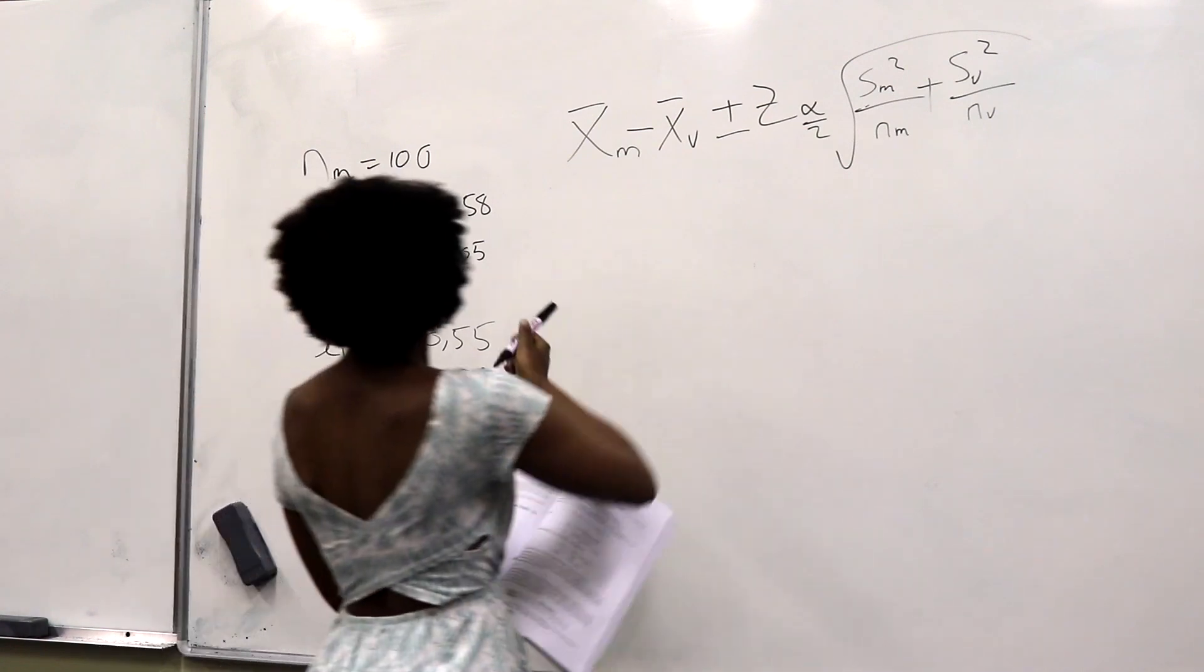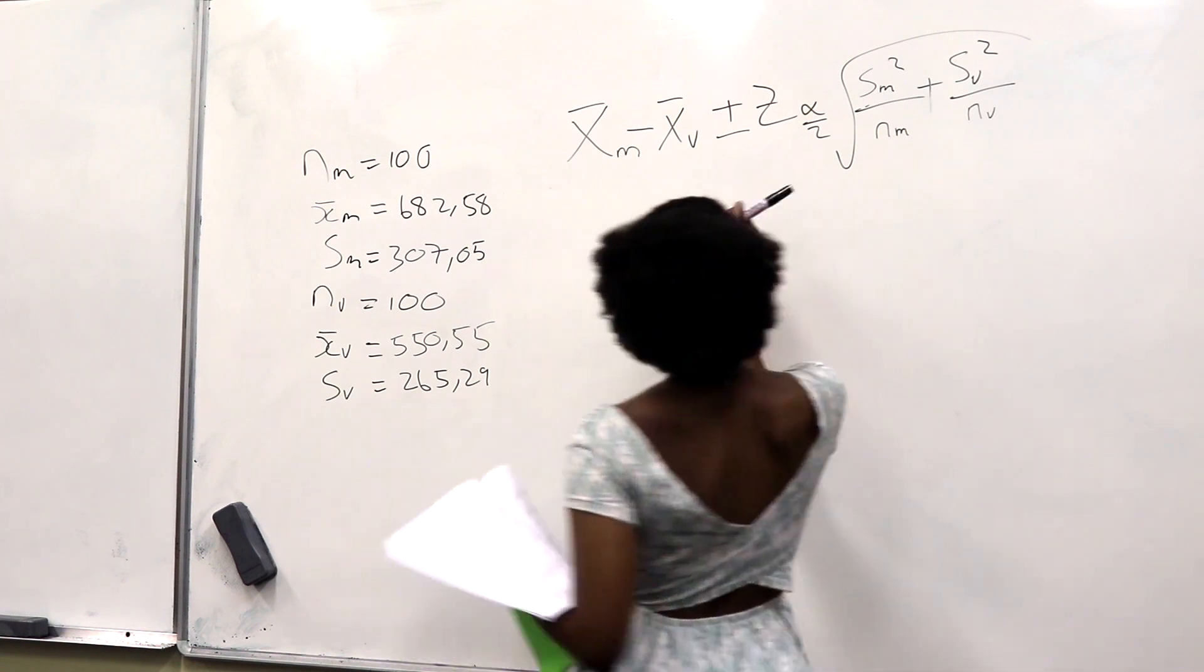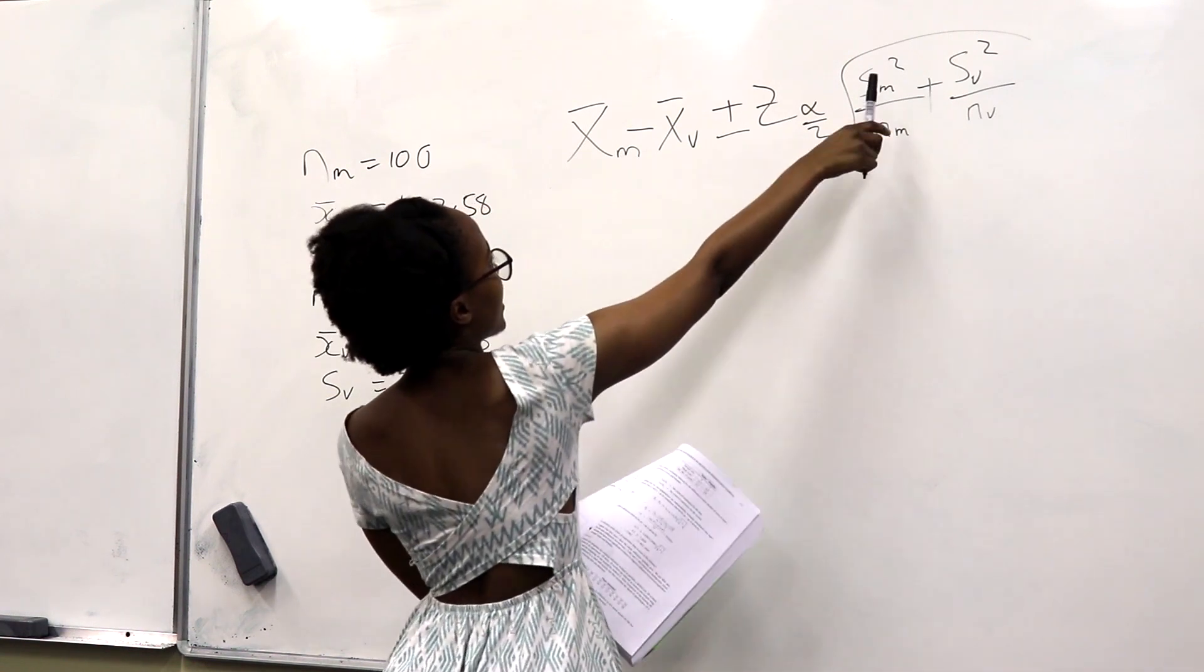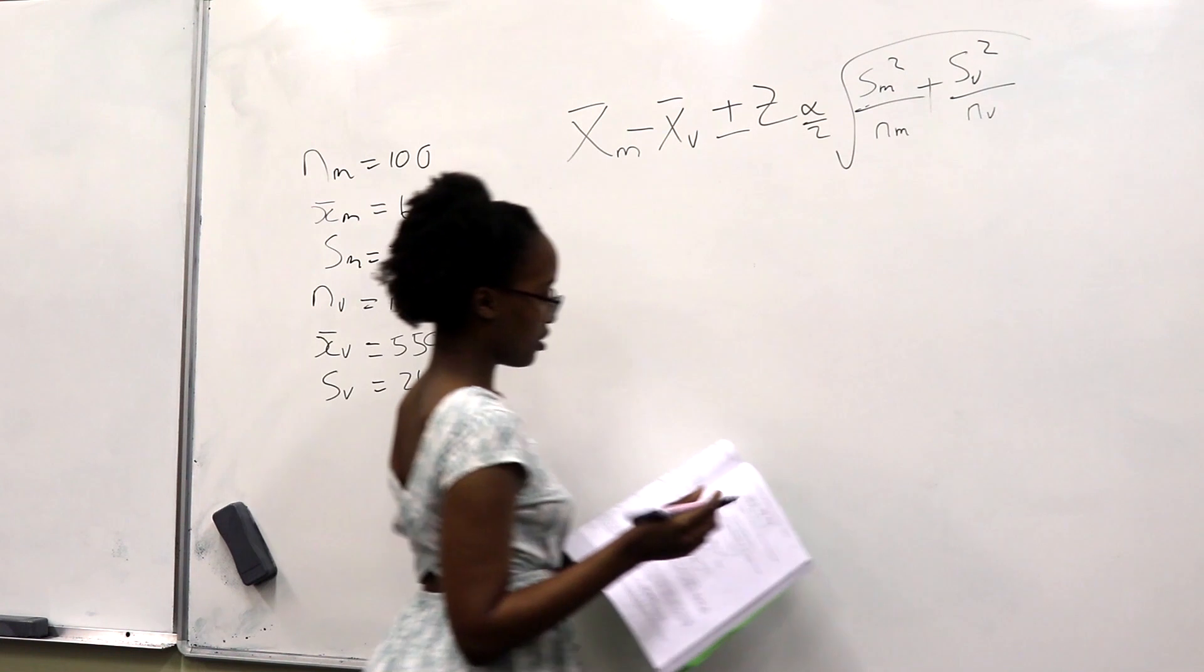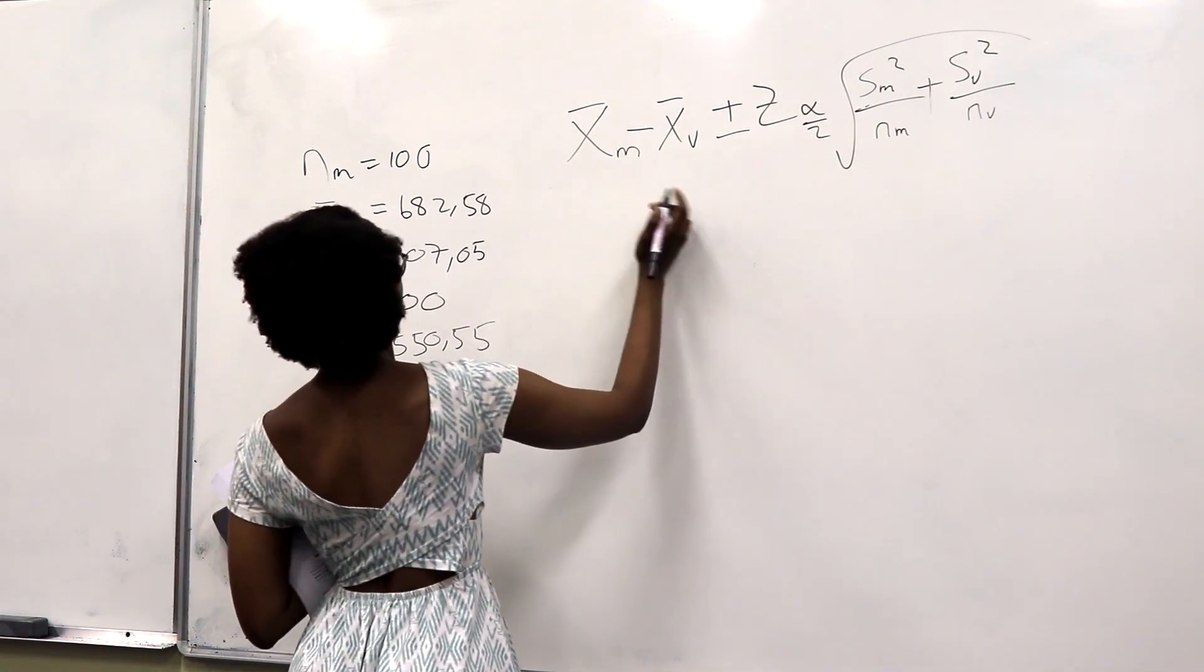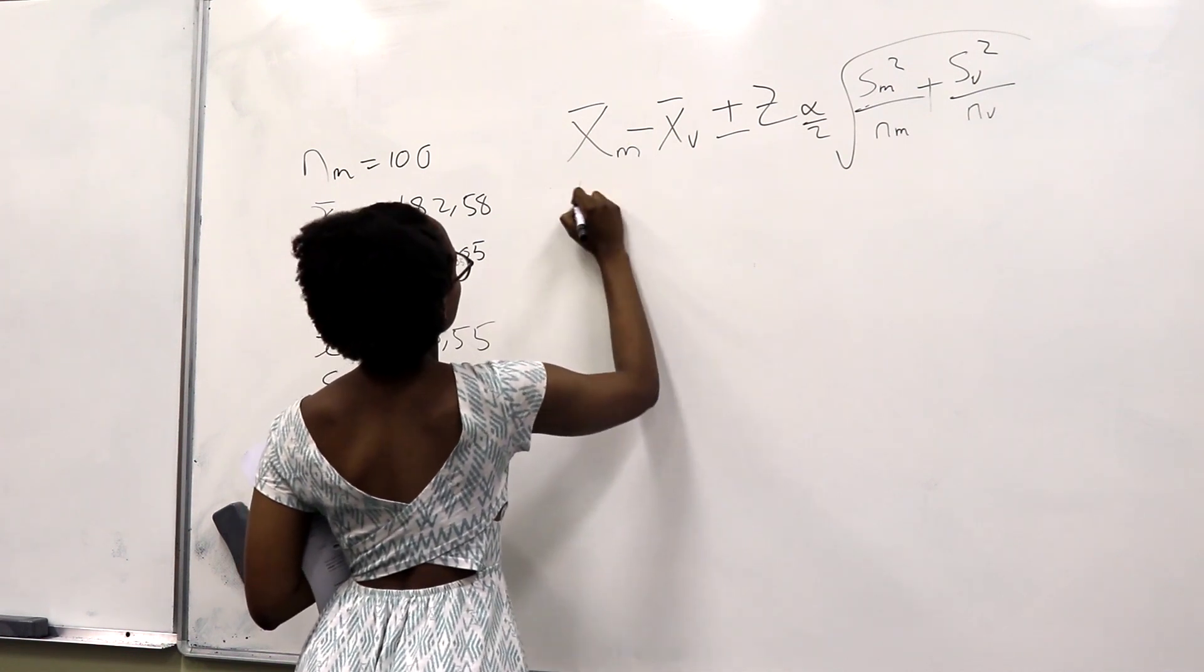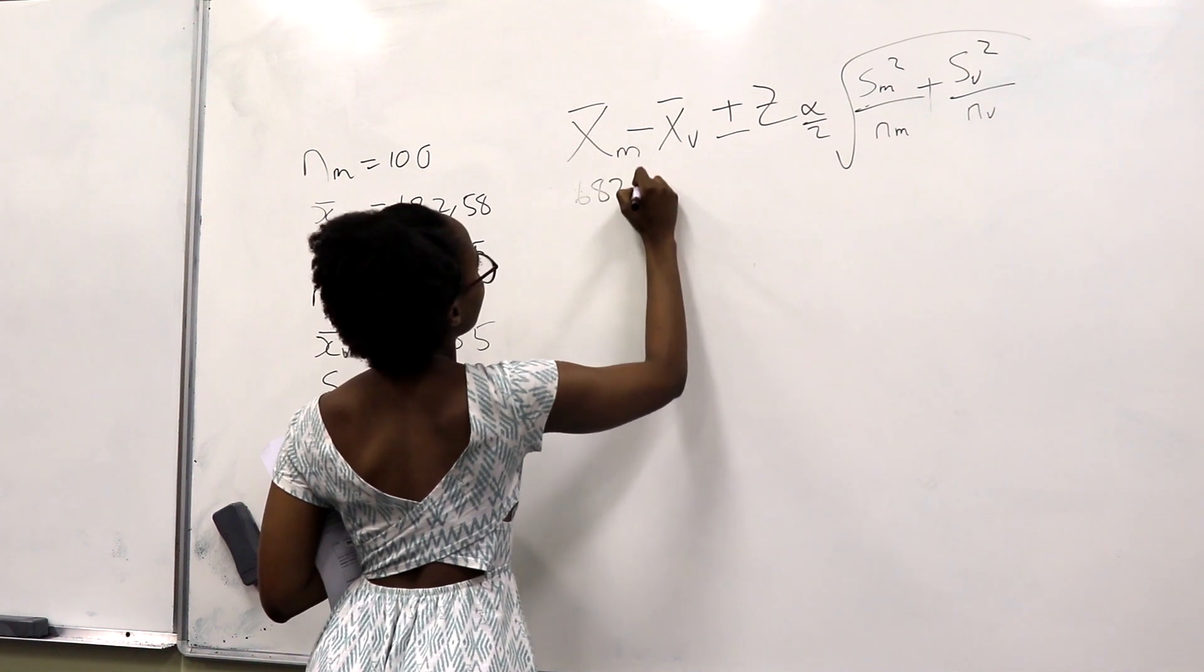Because we have said that our variance for population is unknown, we will use this equation which has the standard deviation. So, I will now substitute everything to the equation, which will be 682.58.